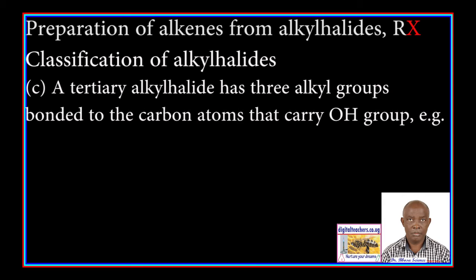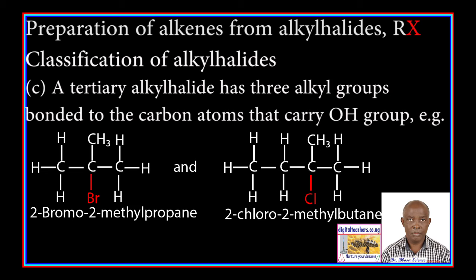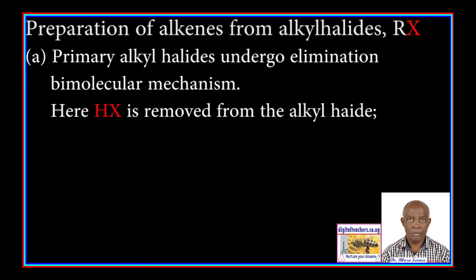Primary alkyl halides undergo E2 elimination. Tertiary alkyl halides have three alkyl groups bonded to the carbon atom that carries the halogen. For example, 2-bromo-2-methylpropane and 2-chloro-2-methylbutane.